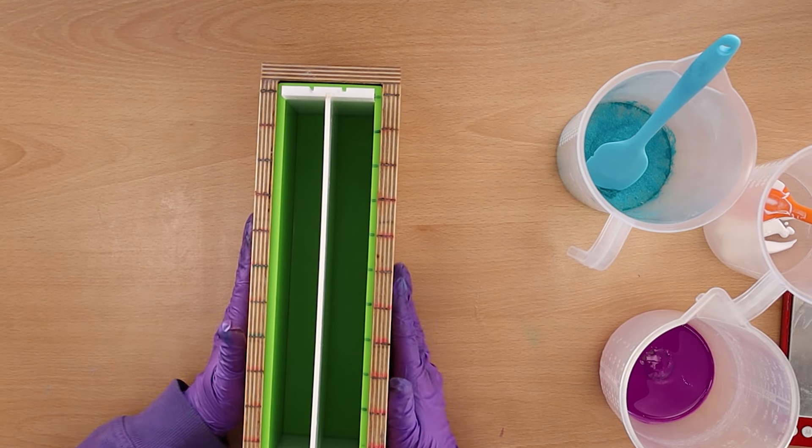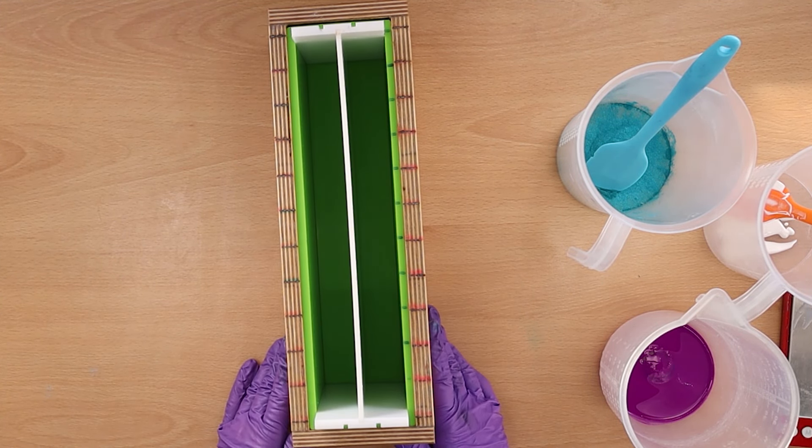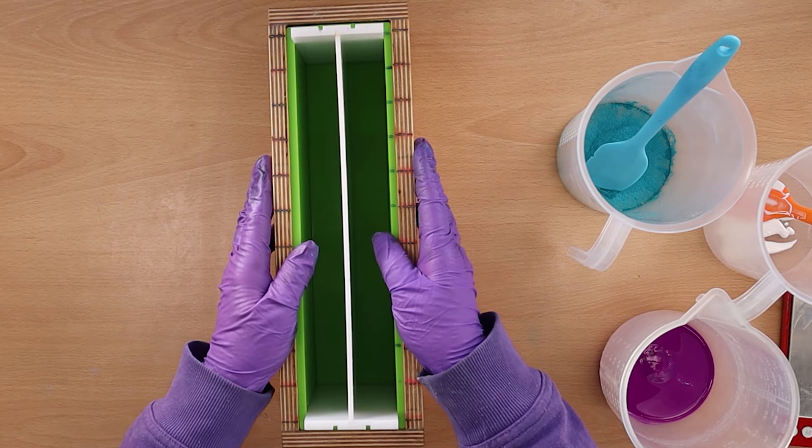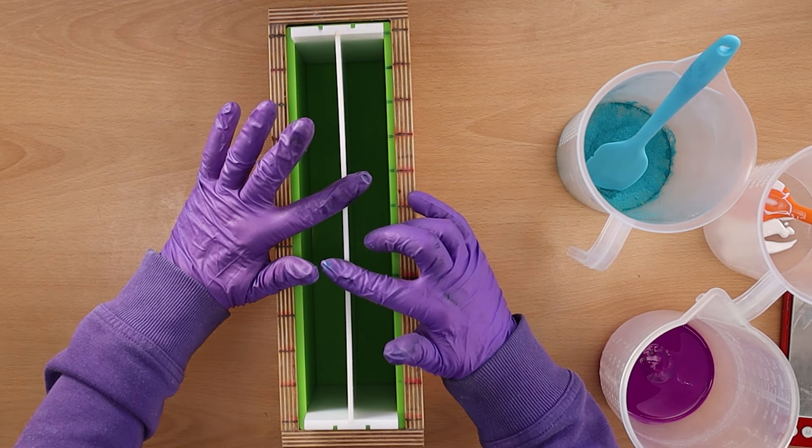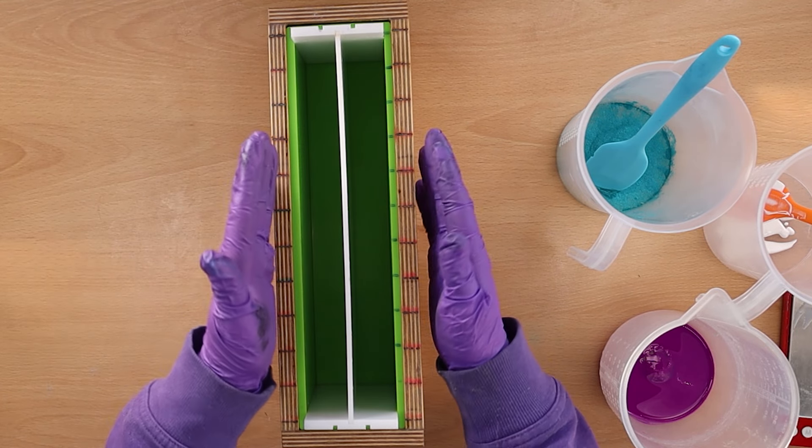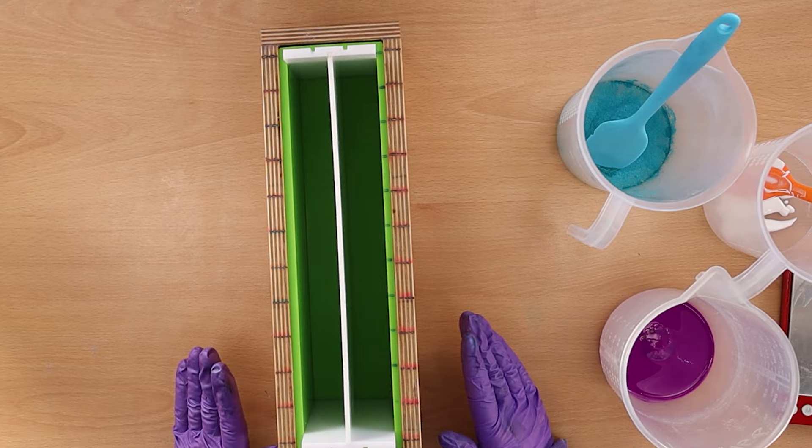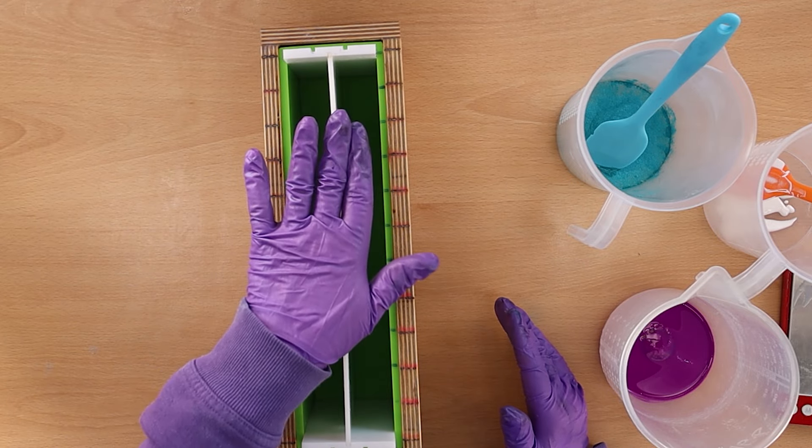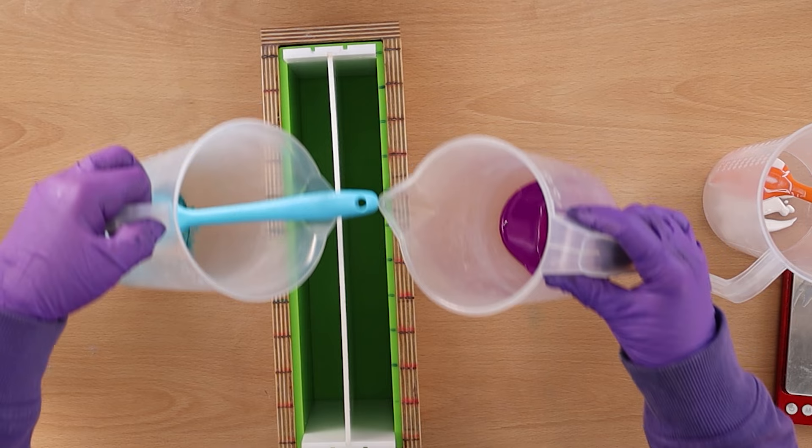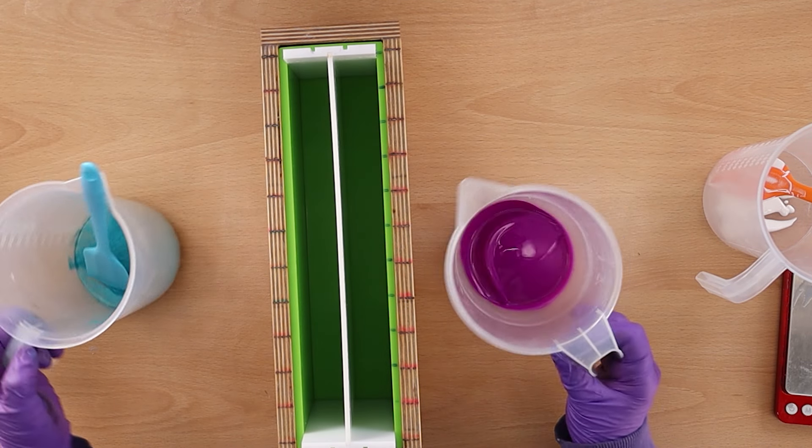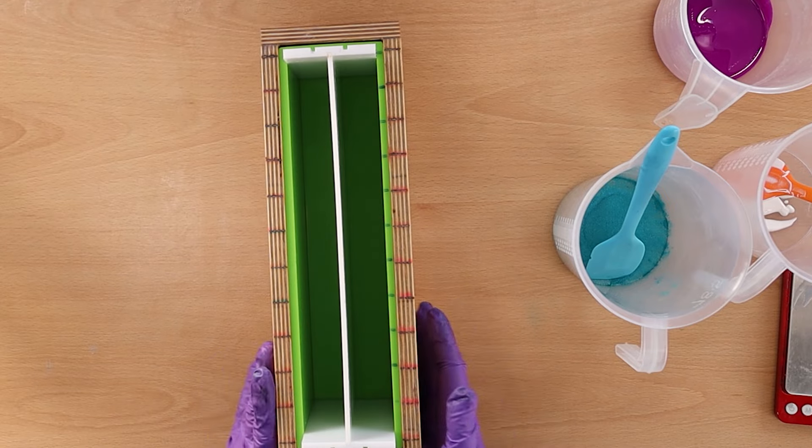I wanted to do four colors and in this tall and skinny mold I thought I had four dividers for it but I didn't have that. I only had either the option for one divider or two dividers, so that would give me three colors and I wanted to do four colors. So what I'm going to try and do is I've put my middle divider in there and then I'm going to pour these other colors like that. I don't know how successful that will be.